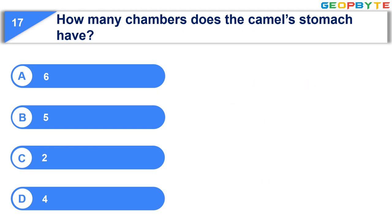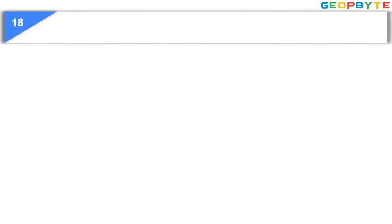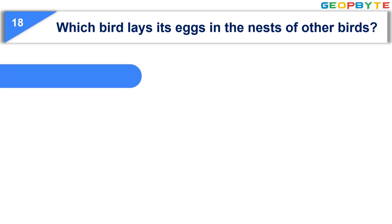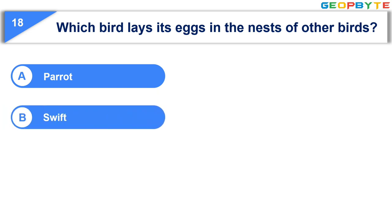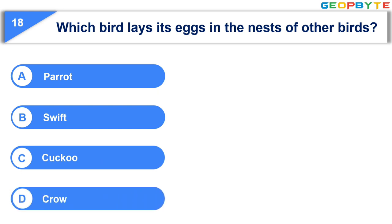Your time is up and the correct answer is Option D: 4. The 18th question is: Which bird lays its eggs in the nest of other birds? Option A: Parrot. Option B: Swift. Option C: Cuckoo. Option D: Crow. Your time starts now.